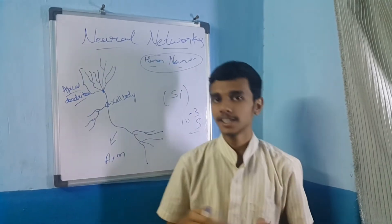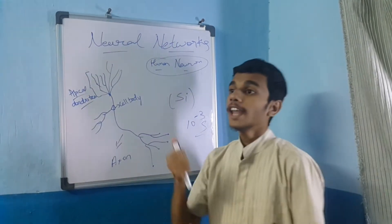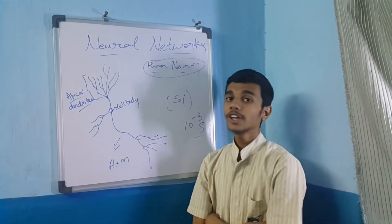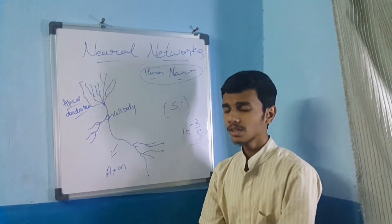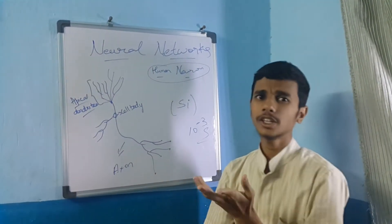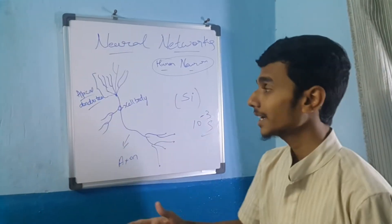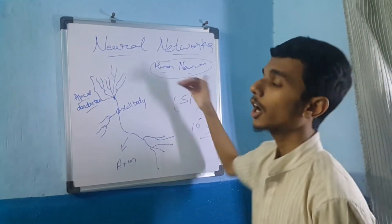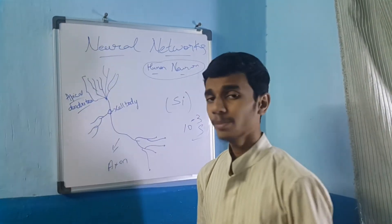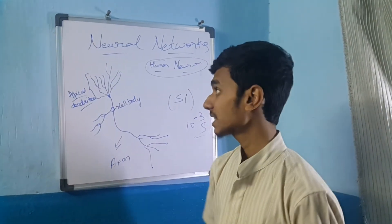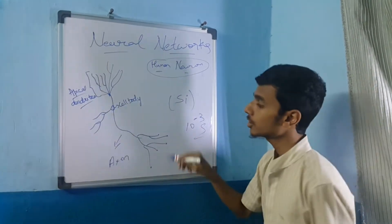We are entering into biology now. We are going to learn the structure of a neuron — what it is, where we find it. We are going to focus on the human neuron located in the brain. A neuron consists of apical dendrites and an axon, as well as terminals which are connected to other neurons, where signals pass.